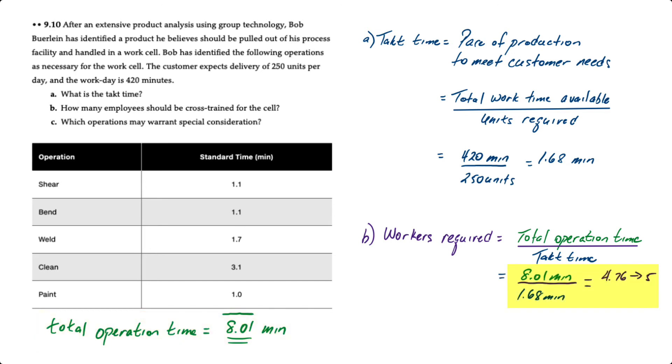So what we'll do is we'll take the 8.01 minutes and divide it by the cycle time of 1.68 minutes we just calculated, and that'll give us 4.76, but you can't have a partial worker so that rounds up to 5 workers.